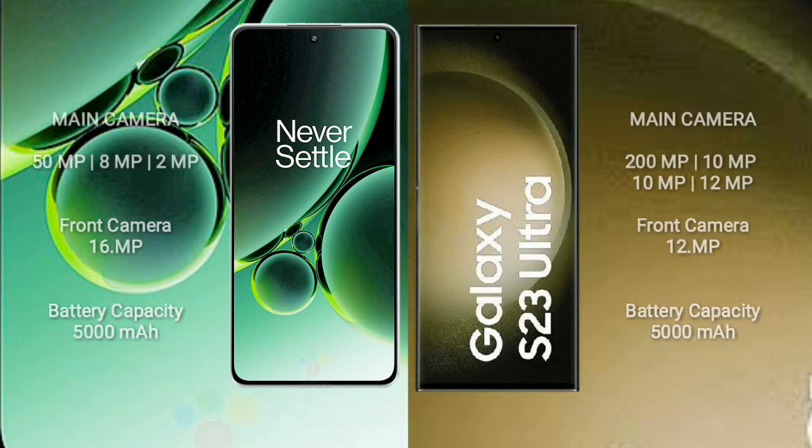OnePlus Nord 3 features a triple rear camera setup: 50MP, 8MP, and 2MP, with a 16MP front camera. Samsung Galaxy S23 Ultra features a quad rear camera setup: 200MP, 10MP, 10MP, and 12MP, with a 12MP front camera.